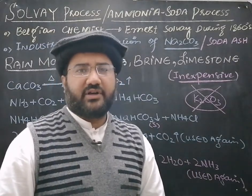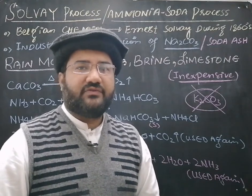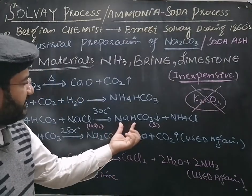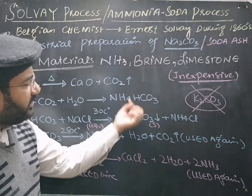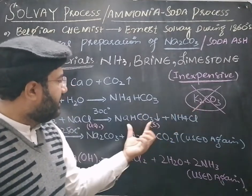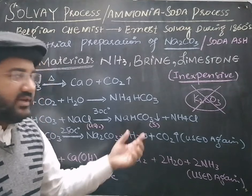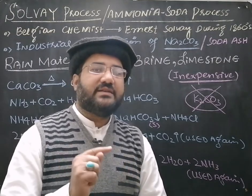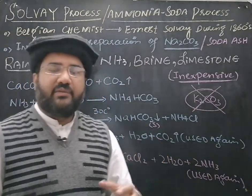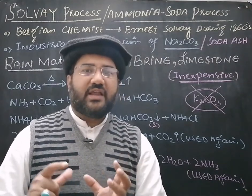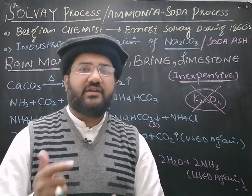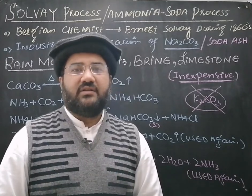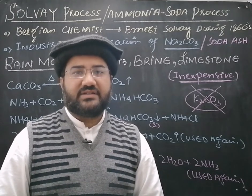An important limitation is that the Solvay process cannot be used for the production of potassium carbonate. If used for that purpose, potassium bicarbonate would be produced instead of sodium bicarbonate, but potassium bicarbonate is much more soluble, so it will not precipitate out. Because it cannot be separated by filtration, it cannot be decomposed to produce potassium carbonate. Therefore, the Solvay process is only used for the industrial-scale production of sodium carbonate.